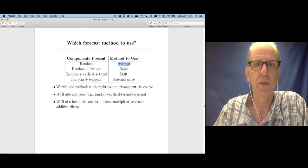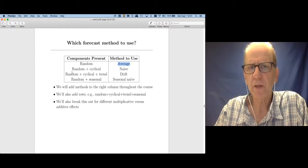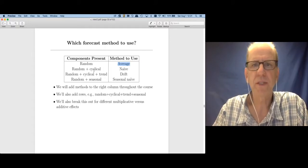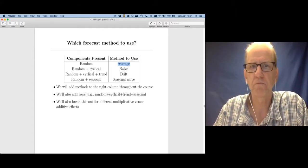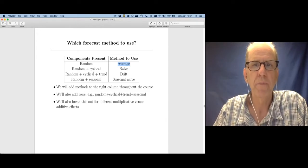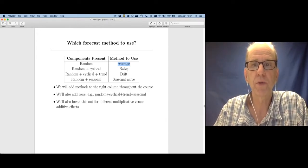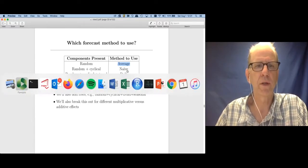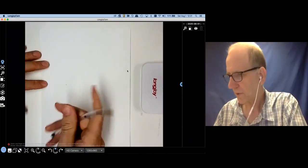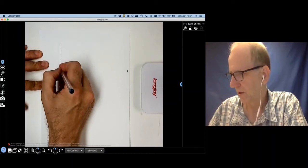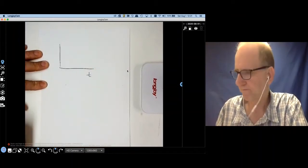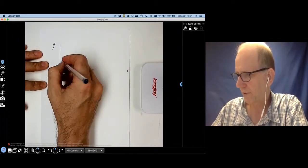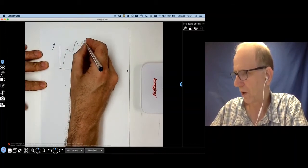Now if we have random with some cyclical effects, for example random walk, then what we're going to do is simply use the naive method. Let me just walk over to the document camera for a second. If this is t and this is my y value, and I have some sort of a random walk going on.